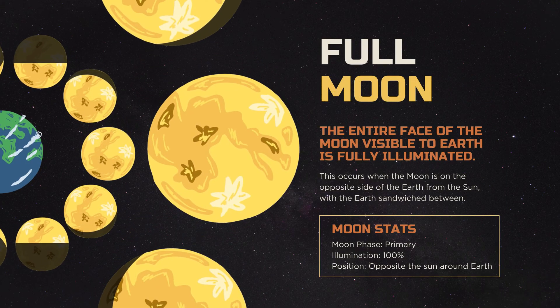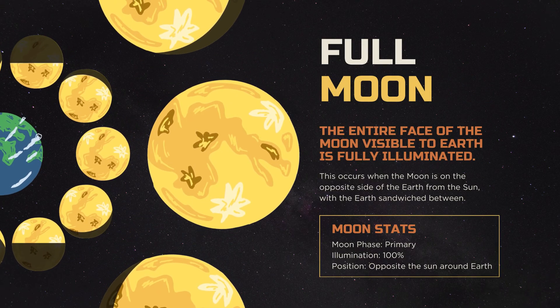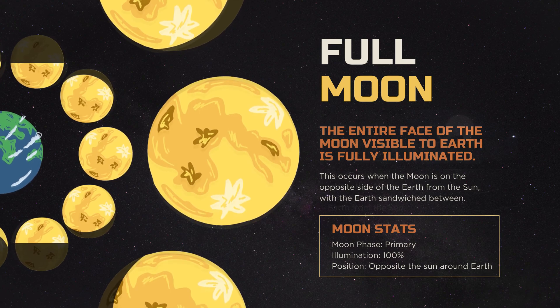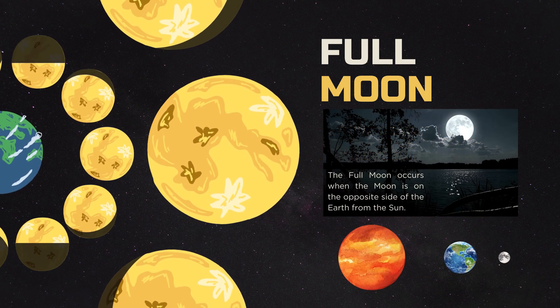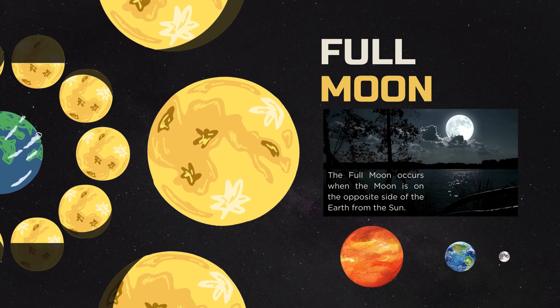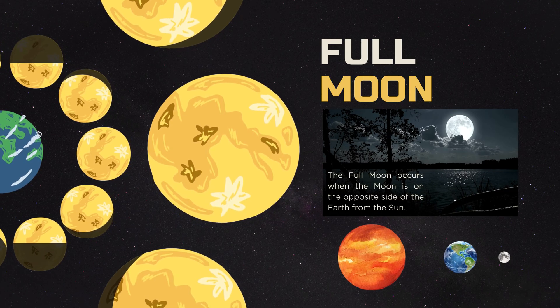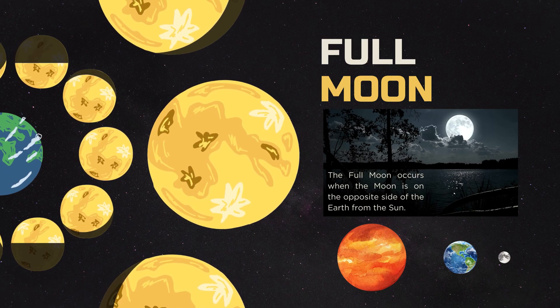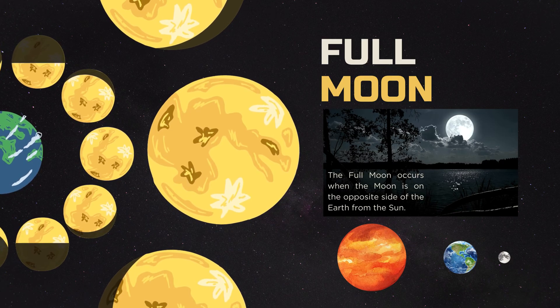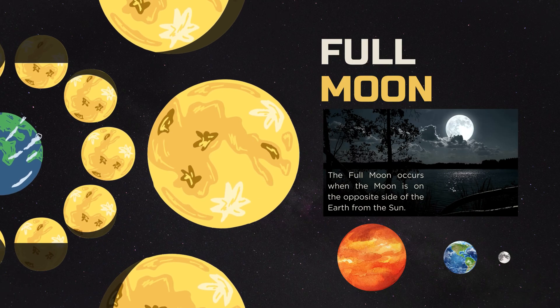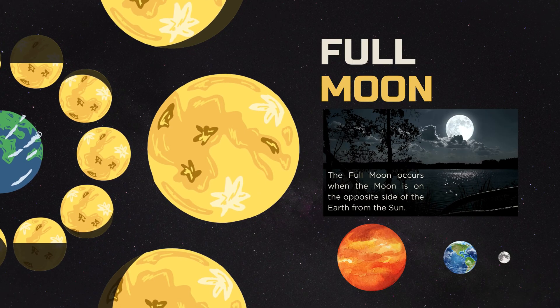The full Moon phase is a sight to behold, with the entire face of the Moon visible from Earth fully illuminated. The Earth is sandwiched between the Moon and the Sun during this phase. During a full Moon, the Moon is at its brightest and illuminates the night sky with its gorgeous glow. Full Moons are typically visible throughout the night, rising in the east around sunset and setting in the west around sunrise.